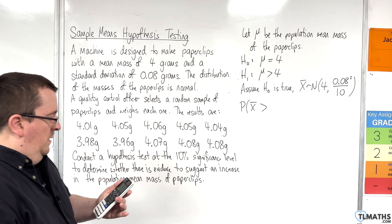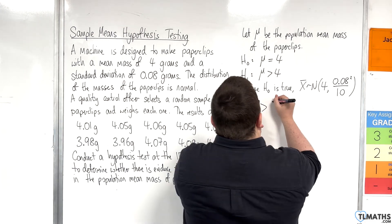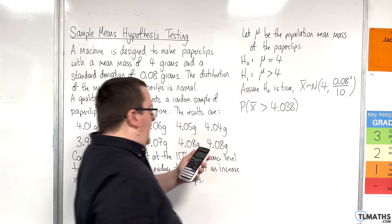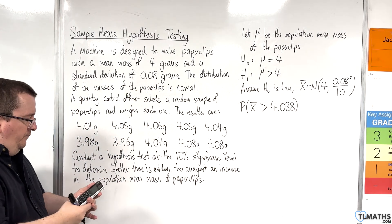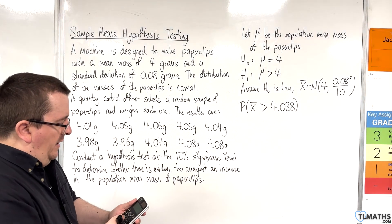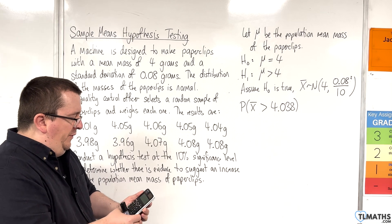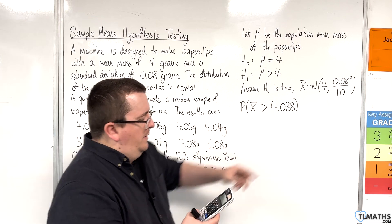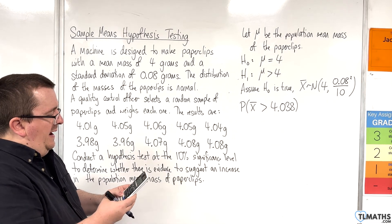We have a mean of 4.038. I'm now going to go to the distribution section on my calculator. Normal CD. My lower value is 4.038.